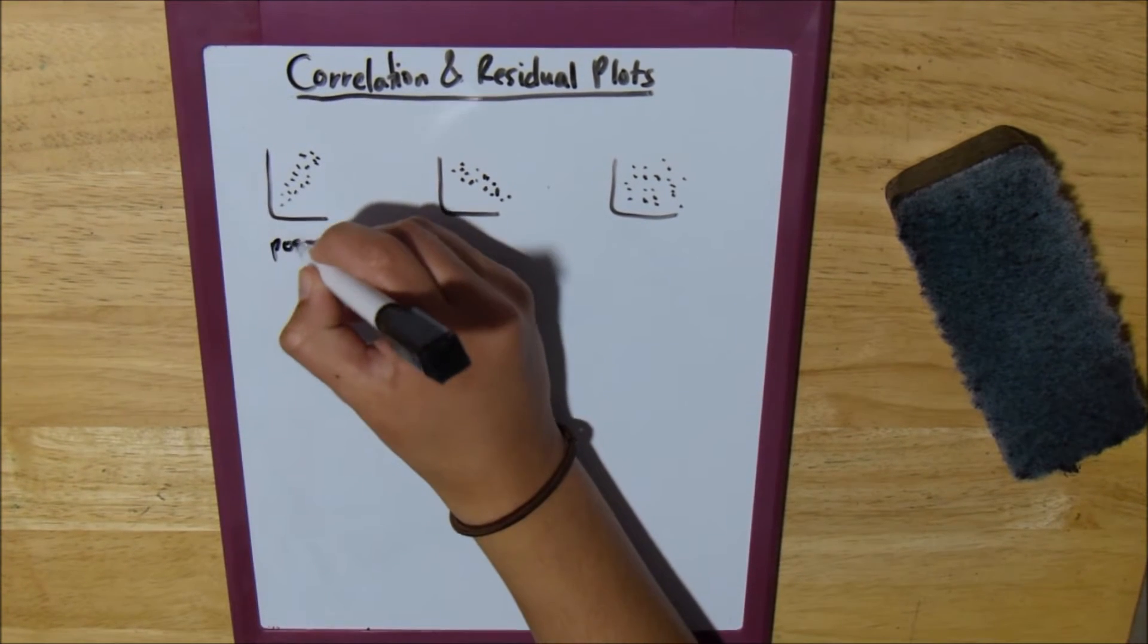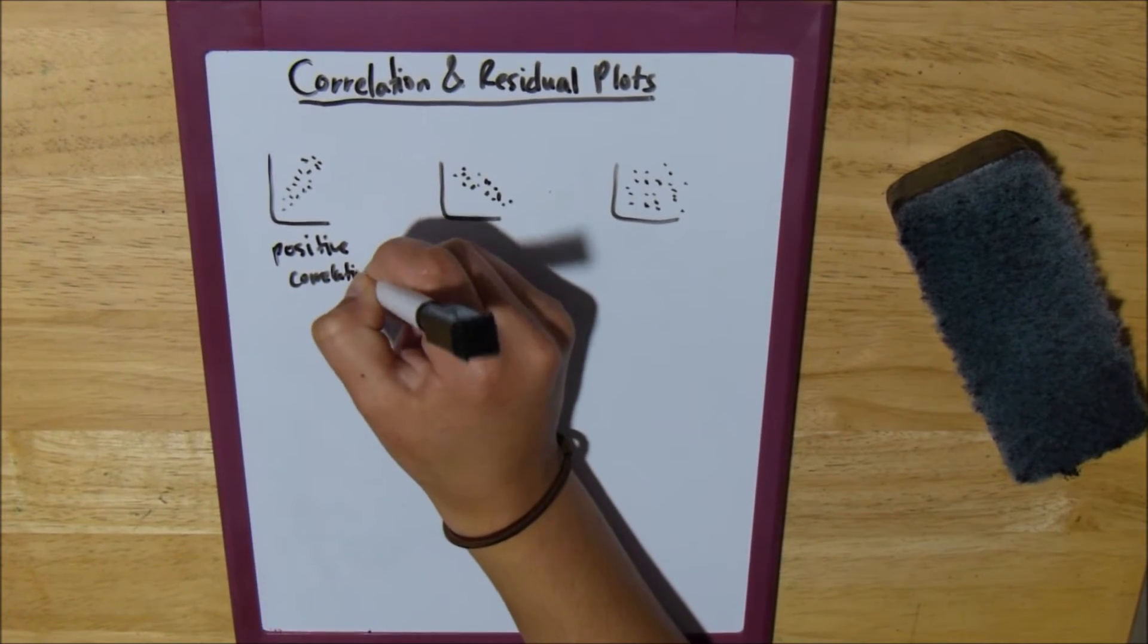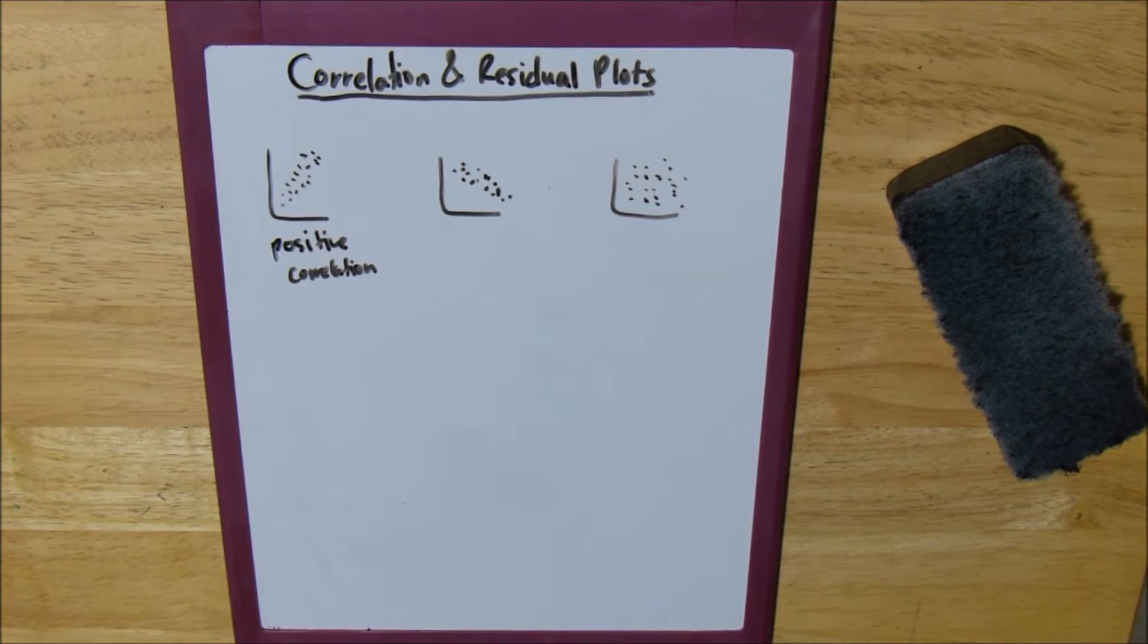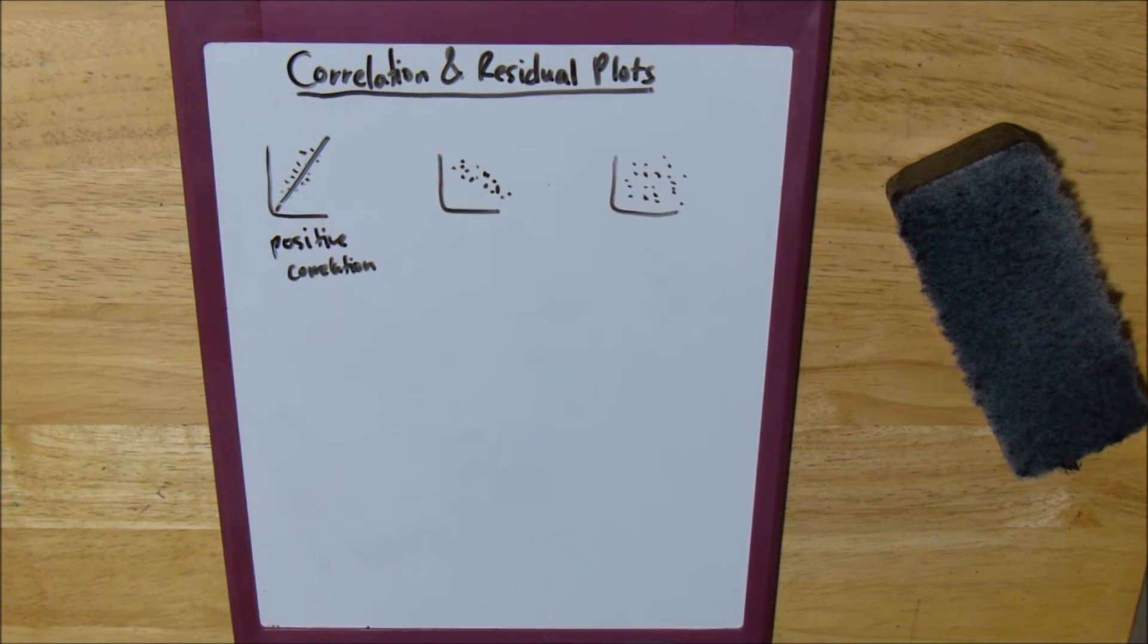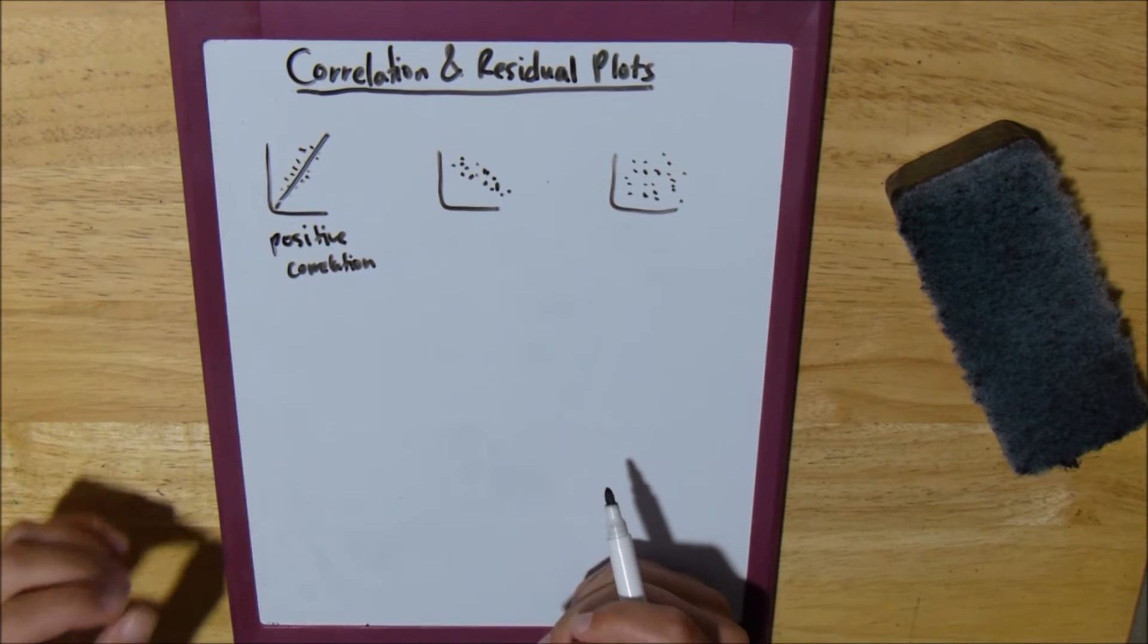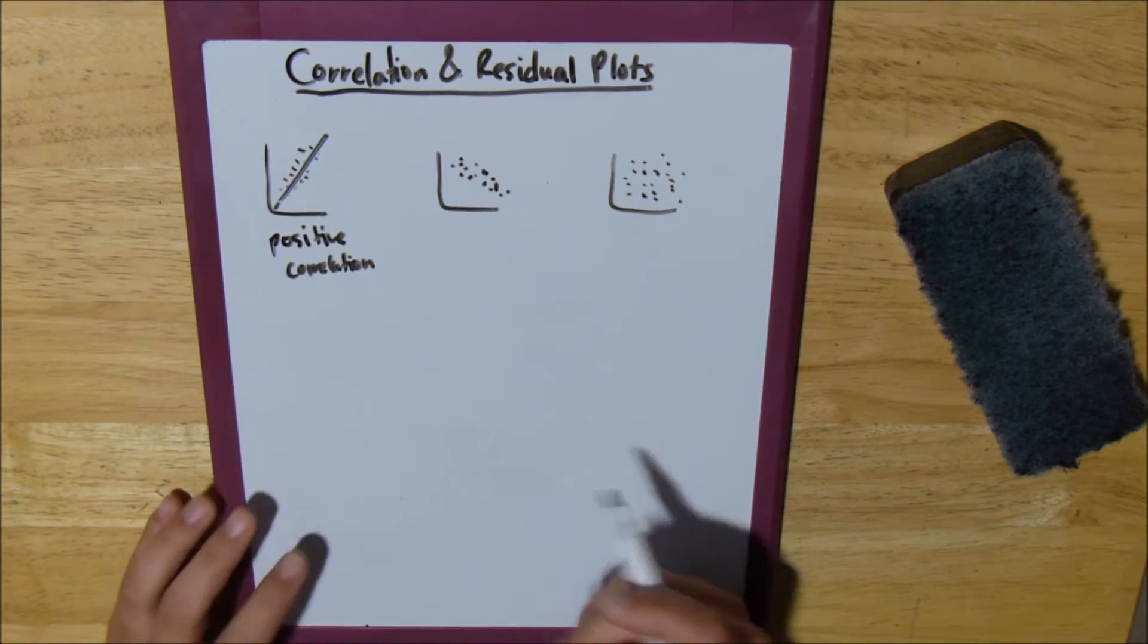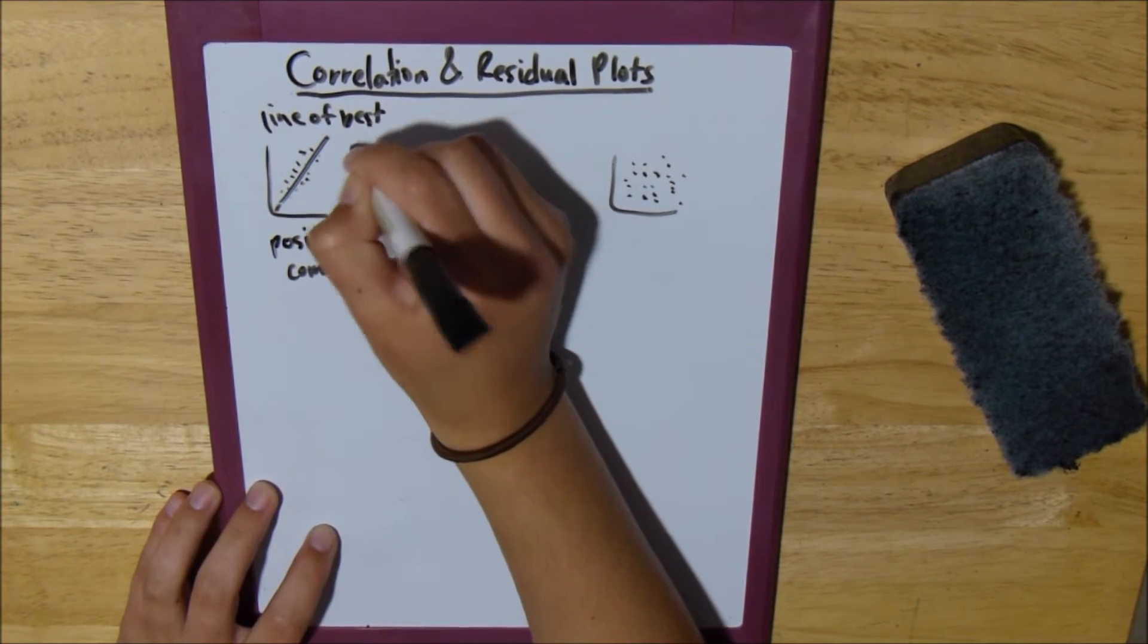We call this first graph positive correlation. We call it positive correlation because if we were to draw a line of best fit through the data, which is basically just the median of all the data, so you want to have the same number of points above and below the line.